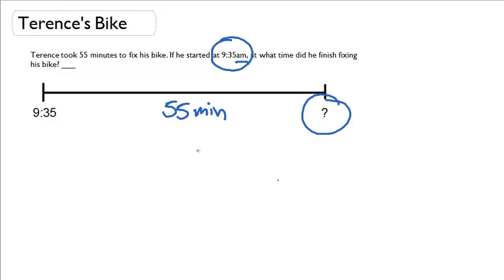So let's solve this. 55 minutes later from 9.35 means we have to add 55 minutes. So let's add 55 minutes to 35, and we get 90.